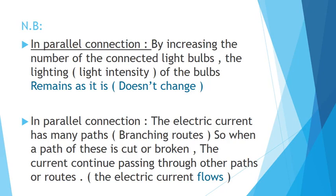In parallel connection, the electric current has many paths or branching routes. When one path is cut or broken, the current continues passing through the other paths or routes, so the electric current flows normally. It's the opposite of series — if any branch is cut or broken, or any lamp is unscrewed, the electric current will still flow.